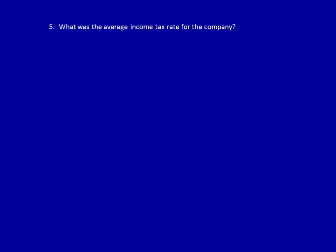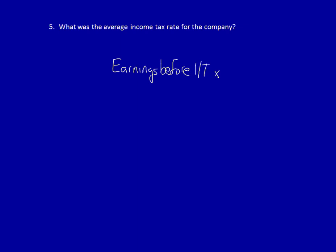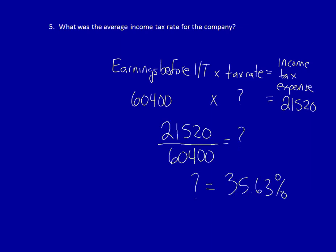What was the average income tax rate for the company? Let's jump back to the statement of earnings. We can see the earnings before income tax and also the income tax expense. In order to calculate the income tax expense, someone must have taken the earnings before income tax and multiplied it by the tax rate. If I know the income tax expense and I know the earnings before income tax, I can calculate the unknown tax rate. The average income tax rate for this company is 35.63%.